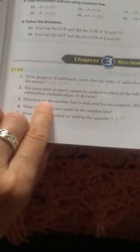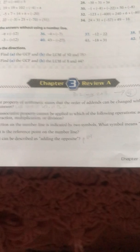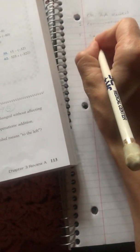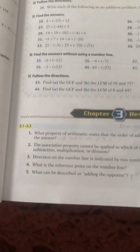So your answer to that problem is, they said the associative property cannot be applied to which ones. Well, it's subtraction and division. So number two, subtraction.